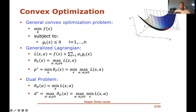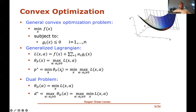In the last video we looked at general convex optimization problems of the form: minimize over x of some convex function f(x), subject to constraints g_i(x) ≤ 0 for convex functions g_i. For such general convex optimization problems we introduced the generalized Lagrangian, which is a function taking a value on a given x and alpha. It takes the original objective value f(x) plus the sum over all constraints of the Lagrange multiplier alpha_i times g_i(x). We define theta_p(x) to be the maximum over non-negative alpha of the generalized Lagrangian, and the primal value as the minimum over x of theta_p(x).